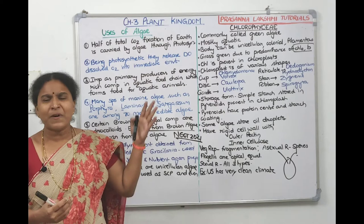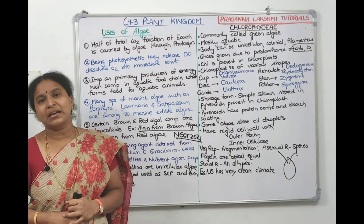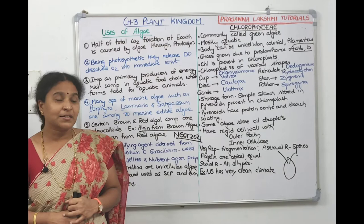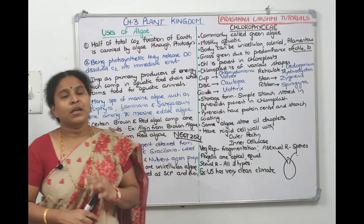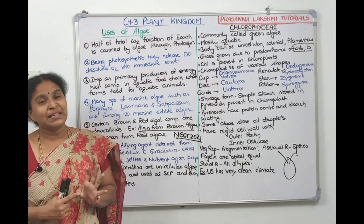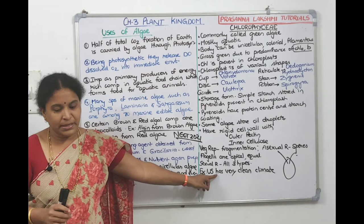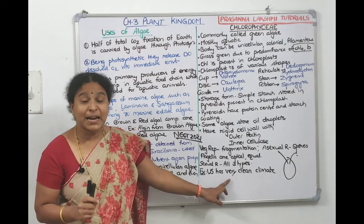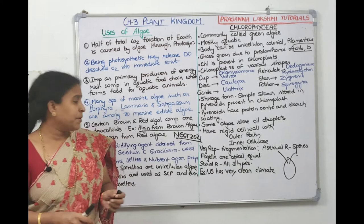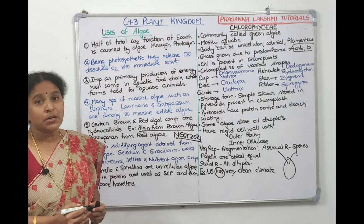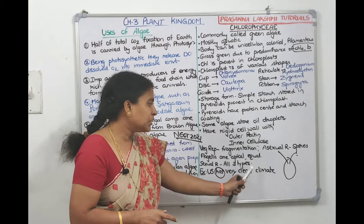Examples of green algae to remember using the code 'US has Very Clean Climate': U for Ulothrix, S for Spirogyra, V for Volvox, C for Chara, C for Chlamydomonas. Green algae are mostly freshwater forms; reserve food is simple starch stored in pyrenoids; flagella are two, apical, equal; predominant pigments are chlorophyll A and B.